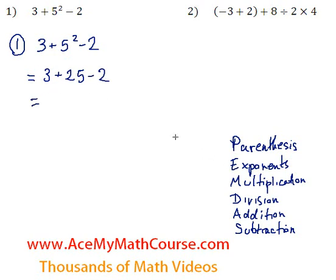Then we just have addition and subtraction. We'll do addition first. 3 plus 25, 28. And subtract 2 from 28. So we're going to get 26. That's it.